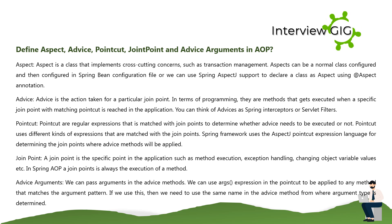A join point is the specific point in the application such as method execution, exception handling, or changing object variable values. In Spring AOP, a join point is always the execution of a method. For advice arguments, we can pass arguments in the advice methods using the args expression in the point cut, applied to any method matching the argument pattern. The same name must then be used in the advice method from where the argument type is determined.